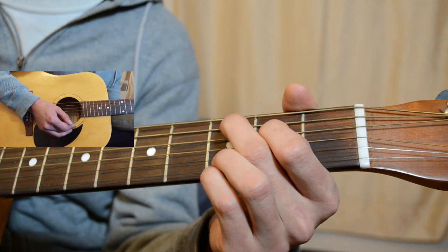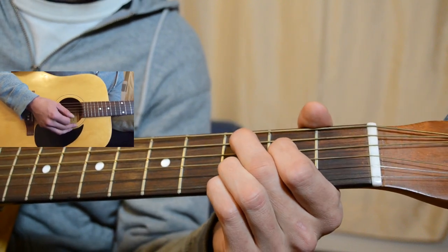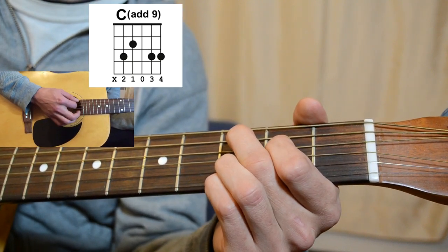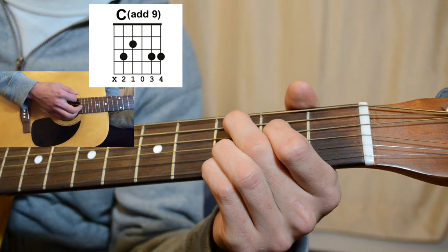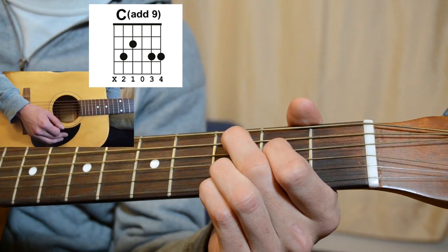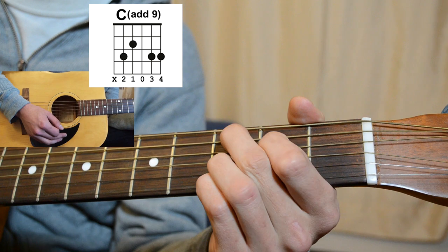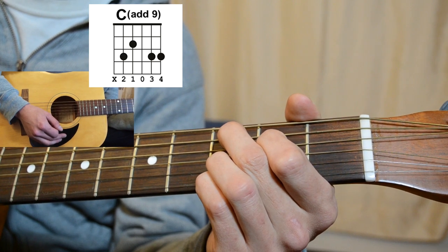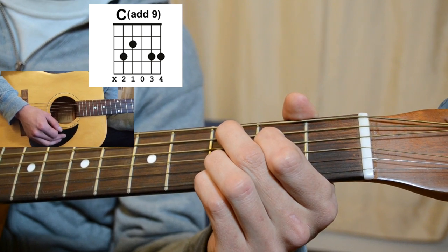So to begin with, we're going to start off with our very first chord, which is a C add 9. So you've got your C add 9 there. It's basically like a G, just one string down each, your index finger and your middle finger.